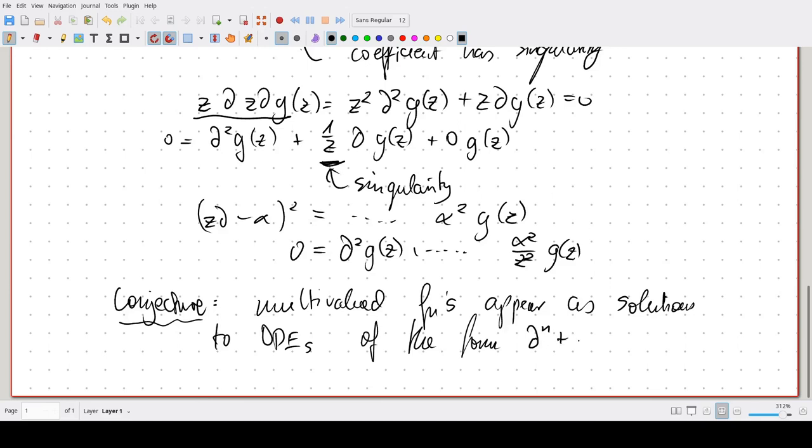nth derivative plus some coefficient function times n minus first derivative plus some other coefficient function times n minus second derivative and so on until the nth coefficient function with no derivative. The first coefficient function a1 can have simple poles, the second one can have double poles, and so on, and the last one may have n-fold poles. So where the i-th coefficient function can have poles of order i.